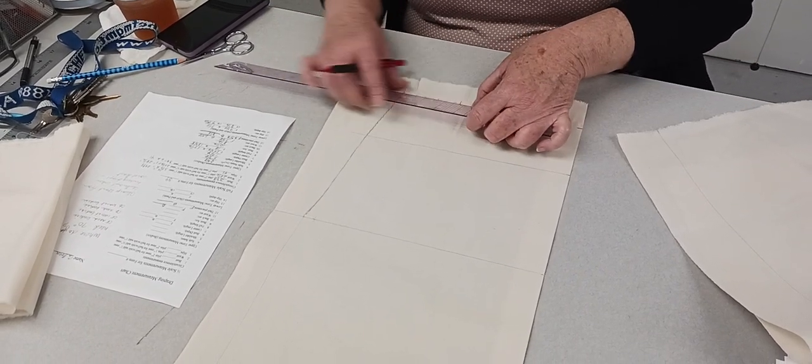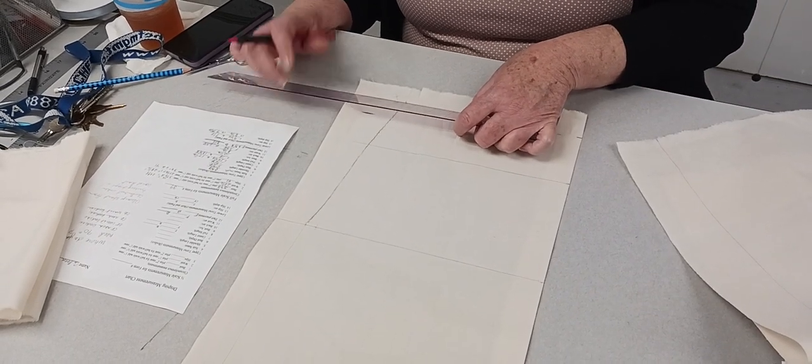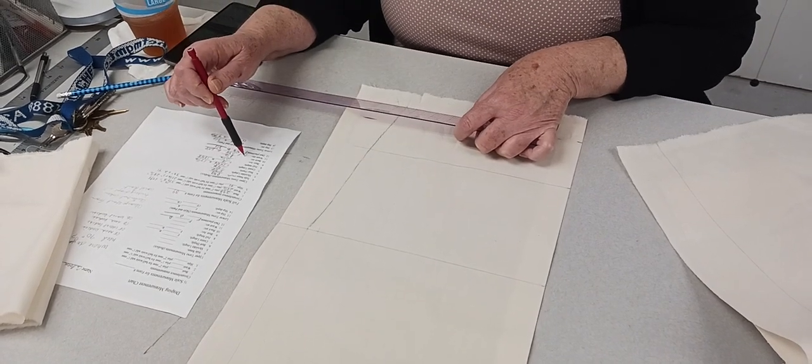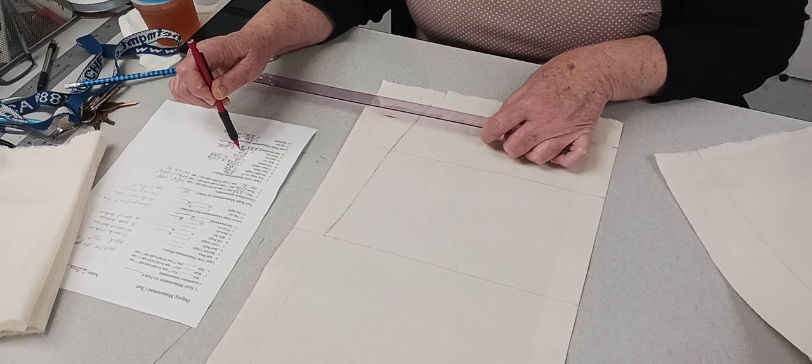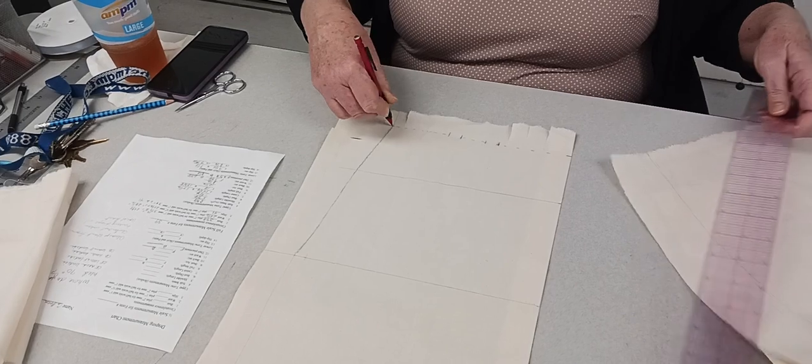From the last dart leg to the side seam - my side seam is supposed to be waist arc seven and three-eighths plus two-eighths which would be my ease, so seven and five-eighths. I'm right on, so everything's good there.